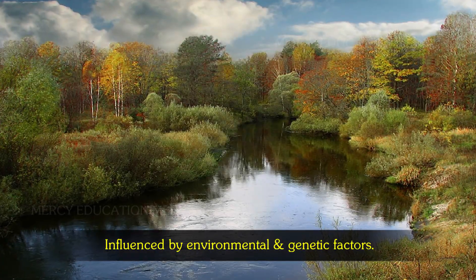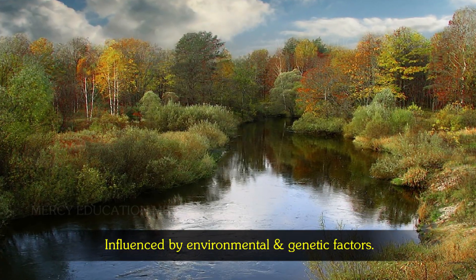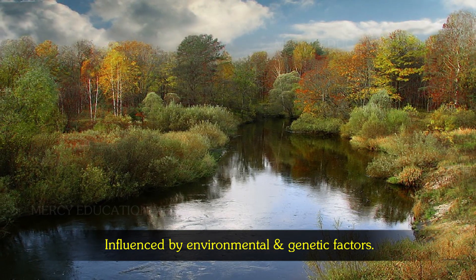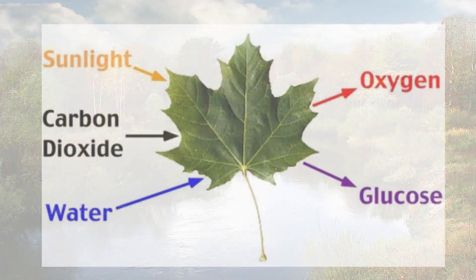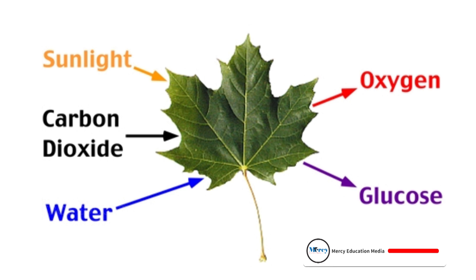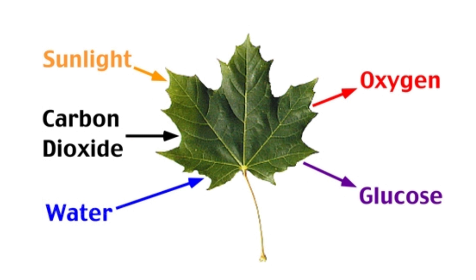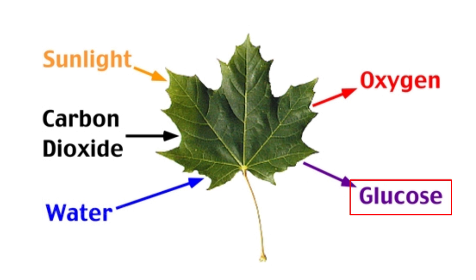Photosynthesis is influenced by both environmental and genetic factors. The environmental factors include light, availability of carbon dioxide, temperature, soil, water and nutrient supply, apart from the age of leaf, leaf angle and leaf orientation.